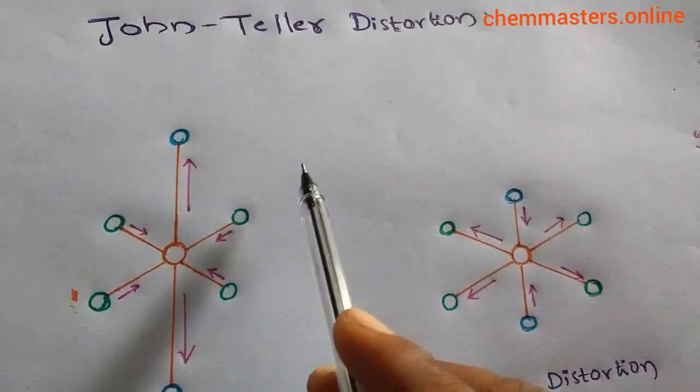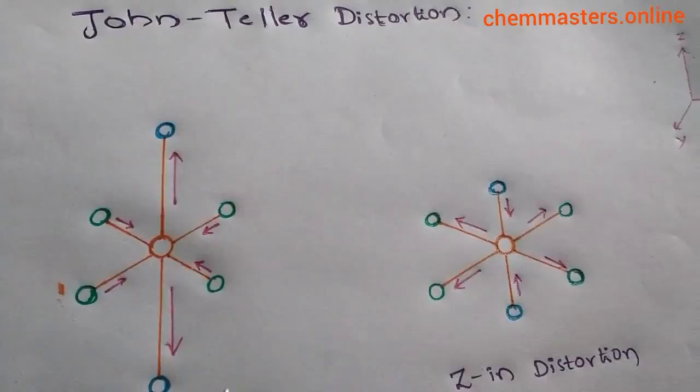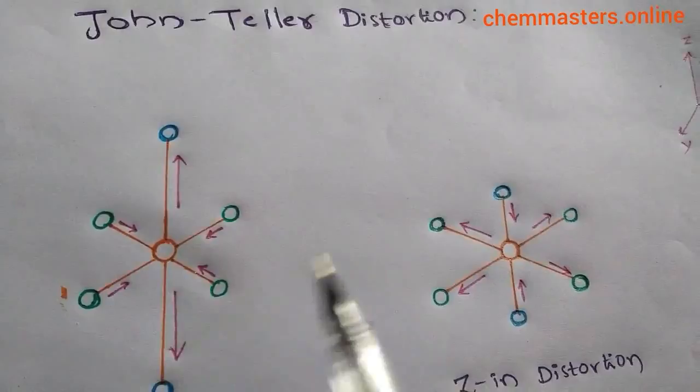Hi, now we are discussing the most important topic of inorganic chemistry for CSIR and GATE examinations. That is Jahn-Teller Distortion. In this lecture, I am going to give a basic level explanation of Jahn-Teller Distortion, which I hope will help you understand more.